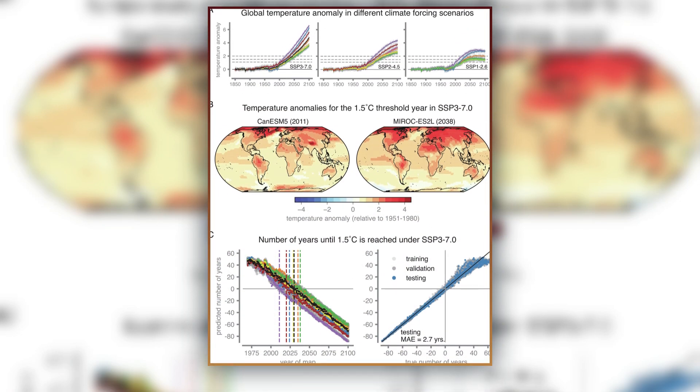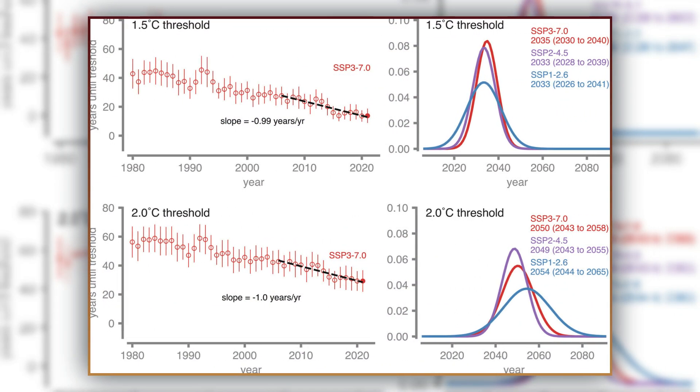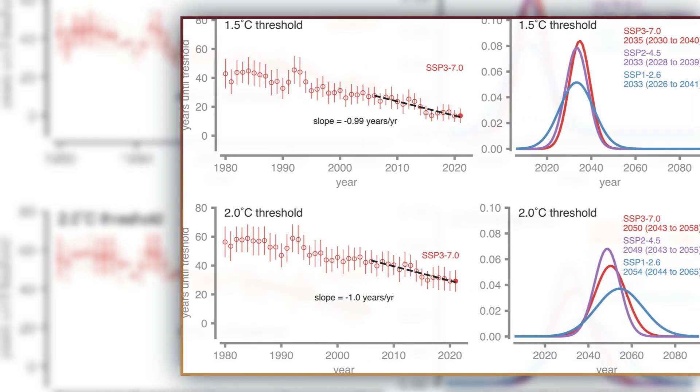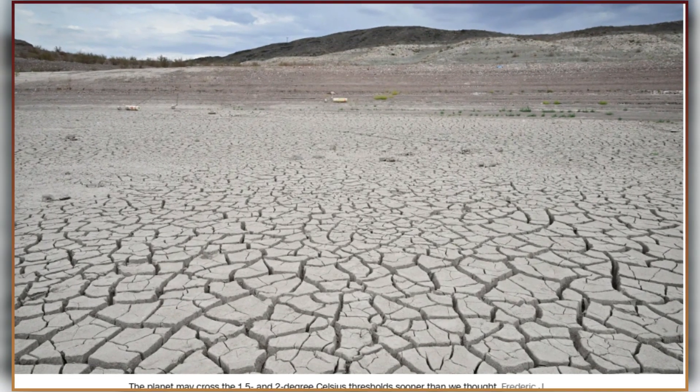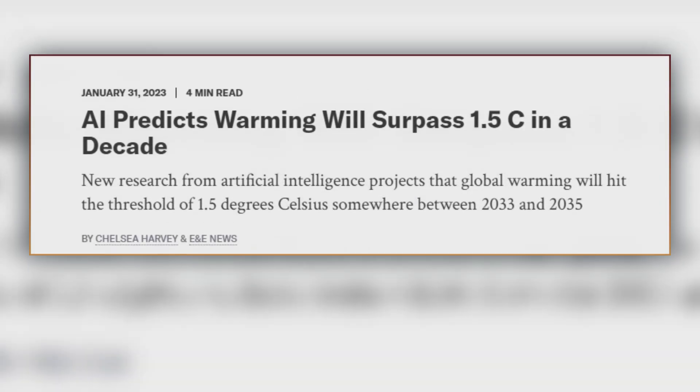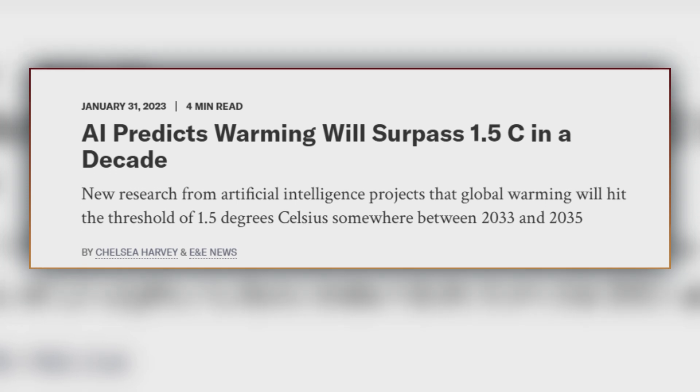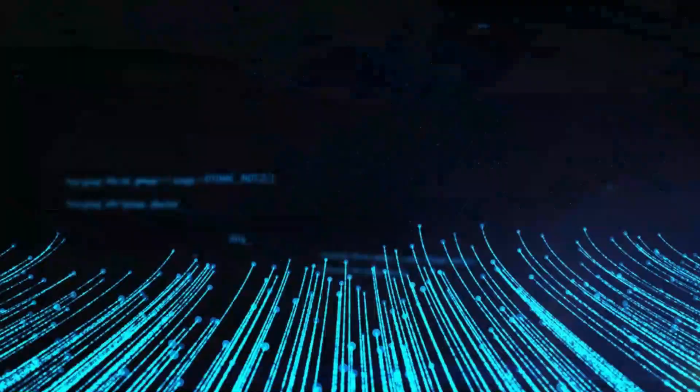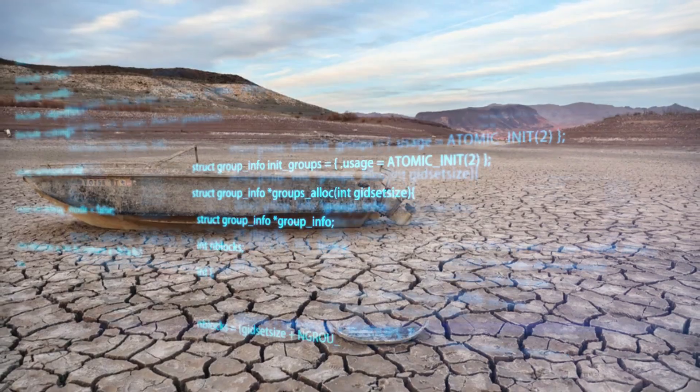The data gets more concerning. AI models predict that by 2050, we'll push past two degrees of warming decades earlier than previous estimates suggested. This acceleration is happening despite current climate policies and technological advances. What's different about this prediction is the unprecedented accuracy. AI systems are now processing climate data from millions of sensors worldwide, combining atmospheric, oceanic, and land-based measurements in ways human researchers never could.